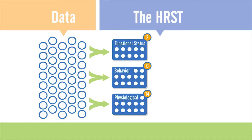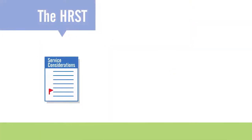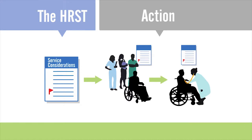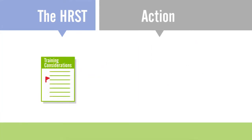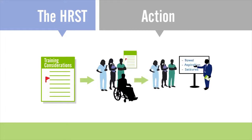Scores tell you where risk has been found and to what degree, but we still need to know how to respond. It is for this reason the HRST produces both service and training considerations, which tell you what actions to take regarding the risk that has been identified. The service considerations indicate what other professionals, specialists, assessments, or evaluations may be needed to avert, mitigate, or eliminate these risks. The training considerations indicate the areas where those who directly support the person should be specifically trained, including staff and family members alike.